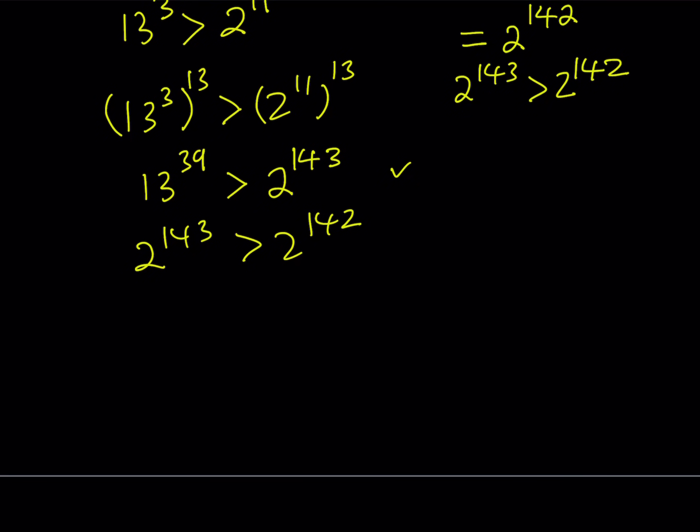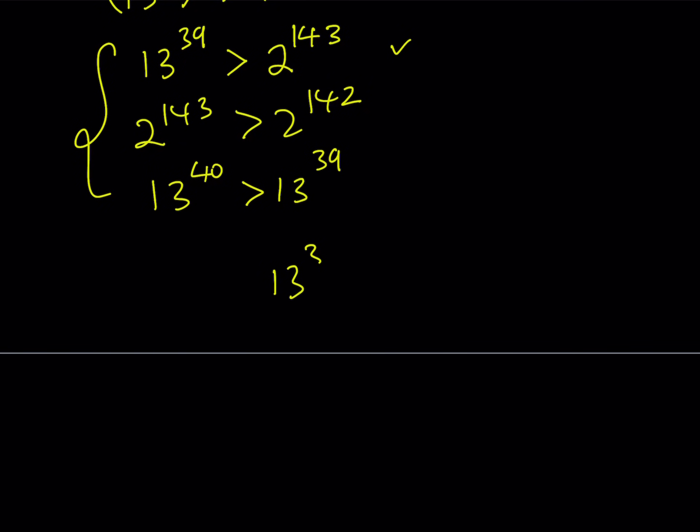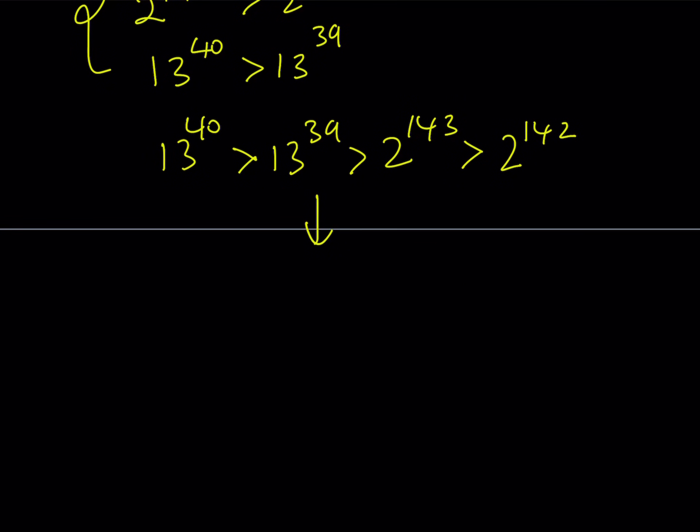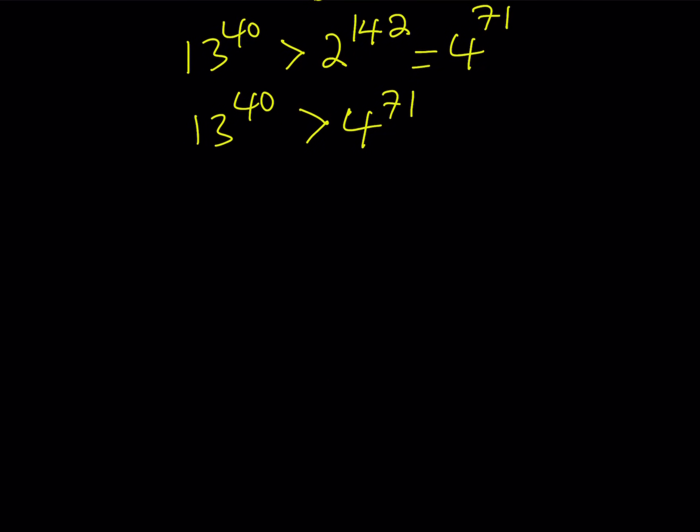But anyways, this is a similar setup, and since my original problem is asking for 13 to the power 40, I can safely say that 13 to the power 40 is greater than 13 to the power 39. Let's double check. Yes, 40 is greater than 39. So now how do you put this all together? I have 13 to the power 39, which is greater than 2 to the power 143, and that is greater than 2 to the power 142. And I also know that 13 to the power 40 is greater than 13 to the power 39. Therefore we have this chain of inequalities which imply that 13 to the power 40 is greater than 2 to the power 142, which is equal to 4 to the power 71. So I can safely say that 13 to the power 40 is greater than 4 to the power 71, which we were trying to compare.